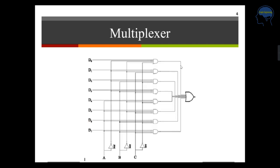This is the logic diagram of your 8-to-1 multiplexer, where inputs go from D0 to D7. Each one represents an output Y — or output F, as shown. When D0 is the data transferred to the output, you have A, B, C as select lines. So D0 gives A-bar·B-bar·C-bar·D0 as the first output. Similarly, D1, D2, D3, D4 and all other input lines are selected and transferred to the output according to different combinations of the A, B, C select lines.